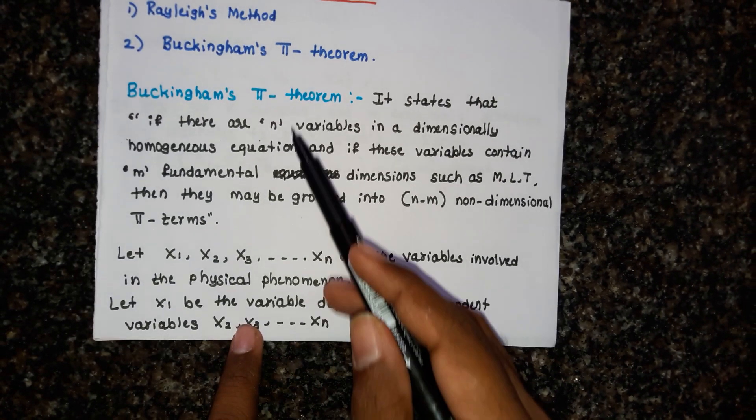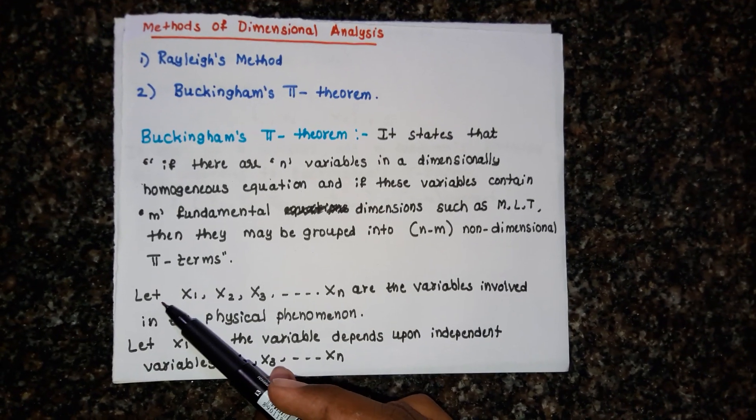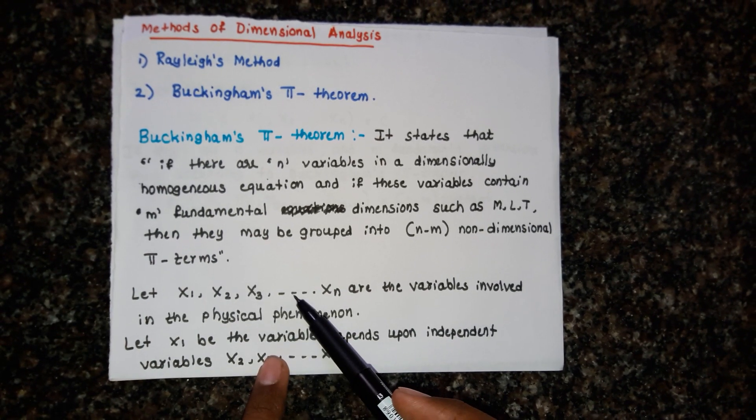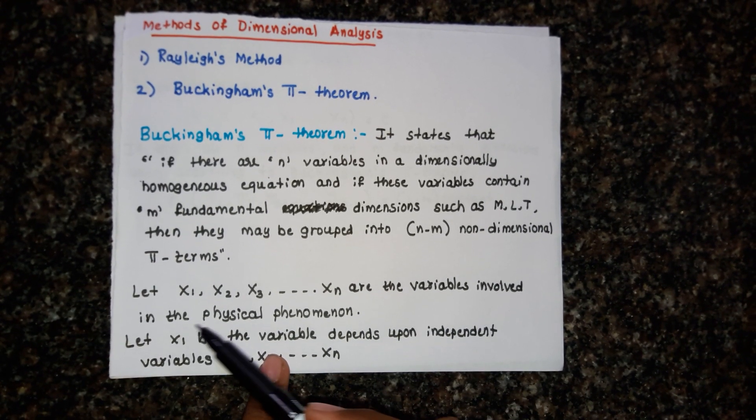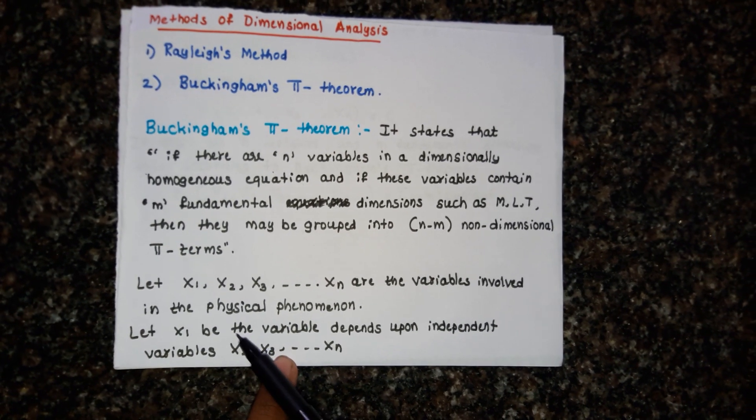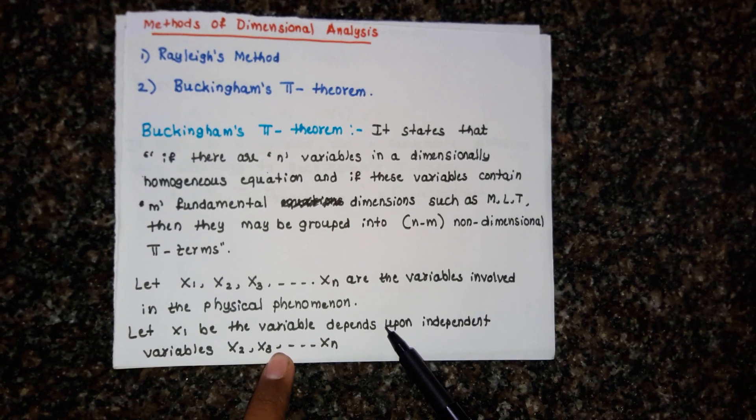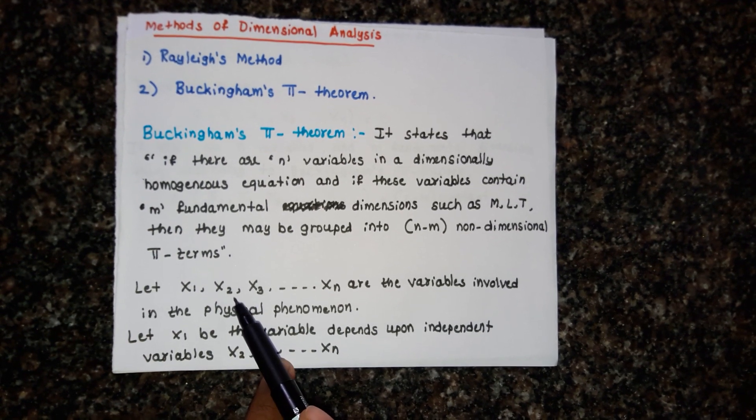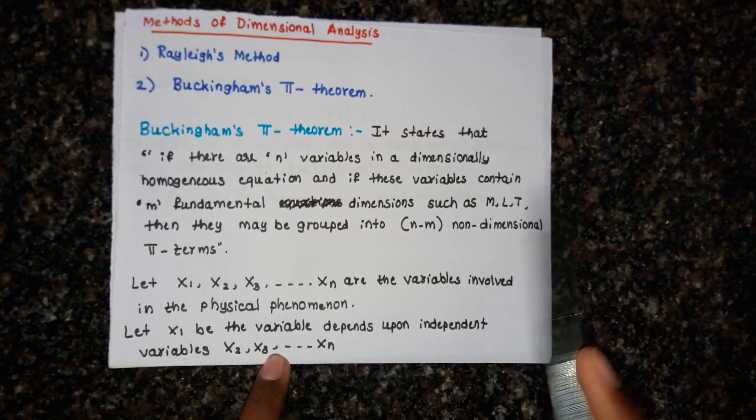Let us illustrate Buckingham Pi theorem. Let x1, x2, x3, up to xn be the variables involved in a physical phenomenon. And x1 be the variable that depends upon independent variables x2, x3, up to xn.